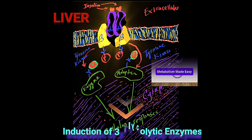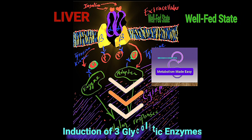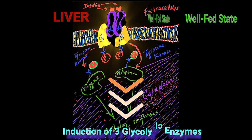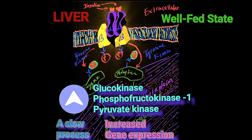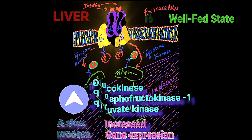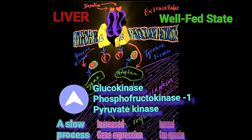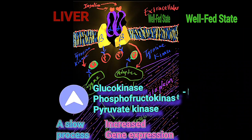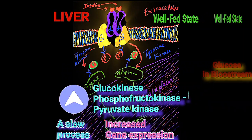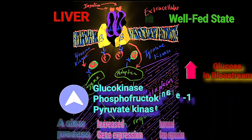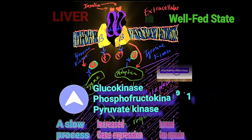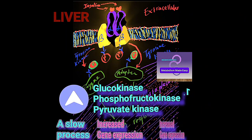One of the post-receptor effects of insulin on the liver is the induction of three glycolytic enzymes: glucokinase, phosphofructokinase, and pyruvate kinase. The increased gene expression of these three enzymes means there is an abundance of them in the liver, which enables the liver to handle increased plasma glucose after a meal. In fact, the liver is able to use up to 60% of the glucose in the plasma after a meal.